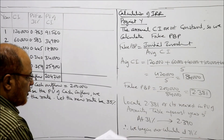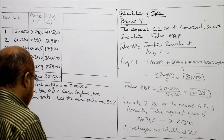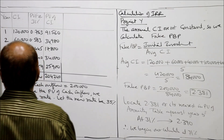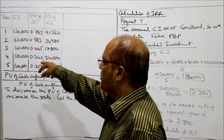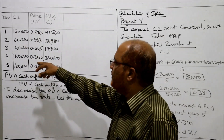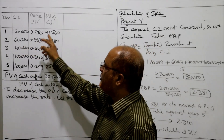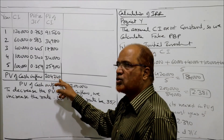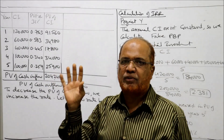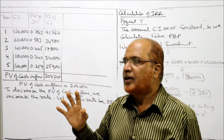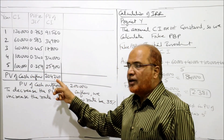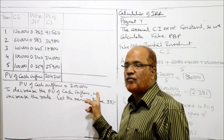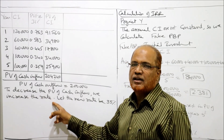At 31% we found 2.391, so we begin our calculations at 31%. In the table, the IRR column shows cash inflows given in the problem, 31% PV factors, then PV of cash inflow by multiplying cash inflow with PV factor. Total PV of cash inflow came to two lakh four thousand two hundred forty. IRR is that rate at which PV of cash inflow equals PV of cash outflow. Here PV of cash inflow is more than two lakh, so to decrease it we increase the rate.